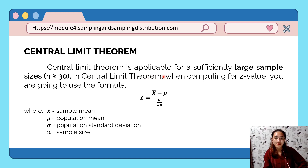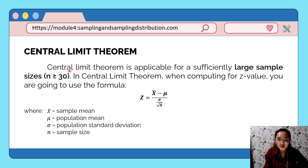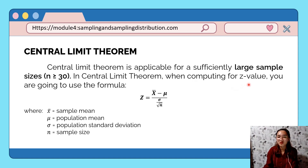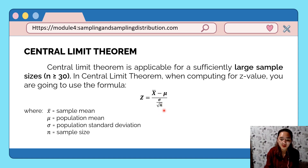The Central Limit Theorem is applicable for sufficiently large sample sizes — n greater than or equal to 30. In statistics, we consider 30 and more than 30. When computing for the z-value using the Central Limit Theorem, we use the formula: z is equal to the sample mean minus the population mean, over the population standard deviation divided by the square root of the sample size.